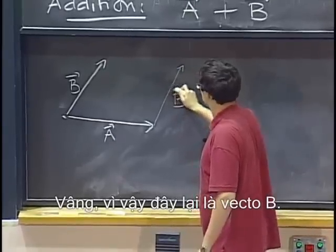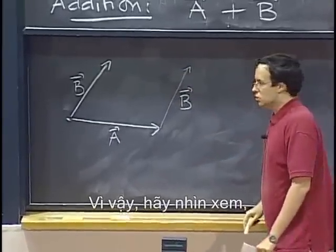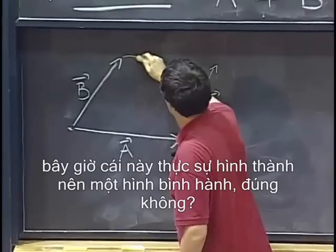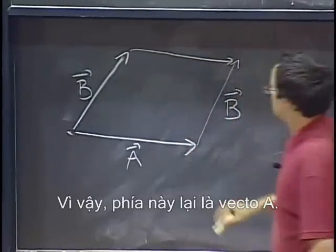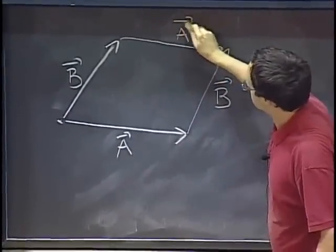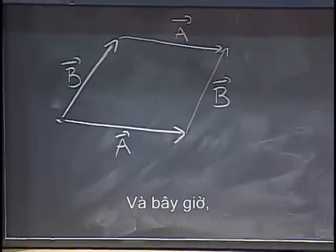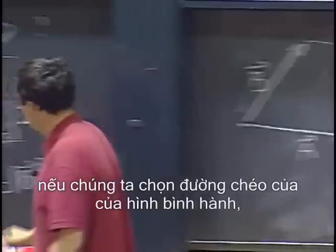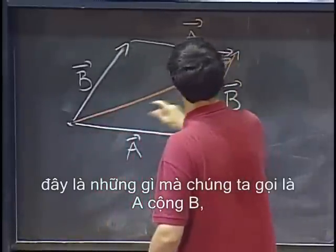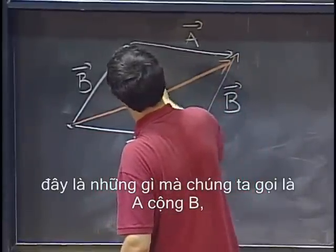OK, so this is, again, vector b. So, observe, this actually forms now a parallelogram. Right? So, this side is, again, vector a. And, now, if we take the diagonal of that parallelogram, this is what we call a plus b.